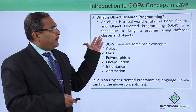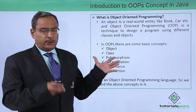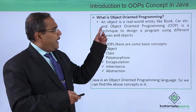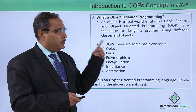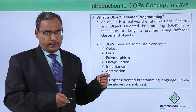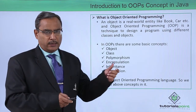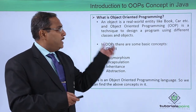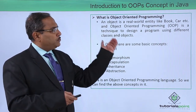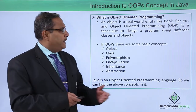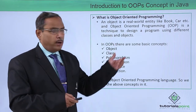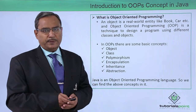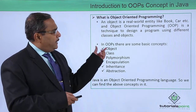In object-oriented programming, the question might be coming to mind: what is object-oriented programming? An object is a real-world entity like our book, like our car, like a person. These are real-world entities, and object-oriented programming is a technique to design programs using different classes and their respective objects.